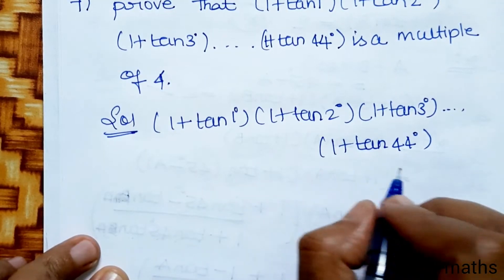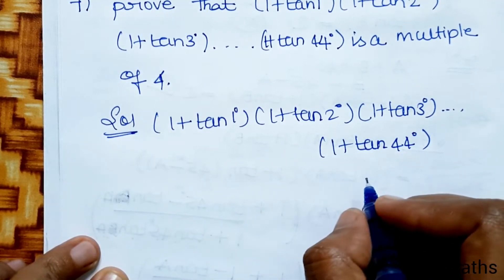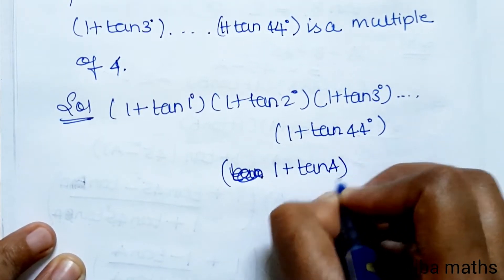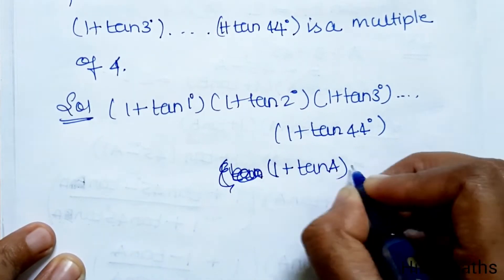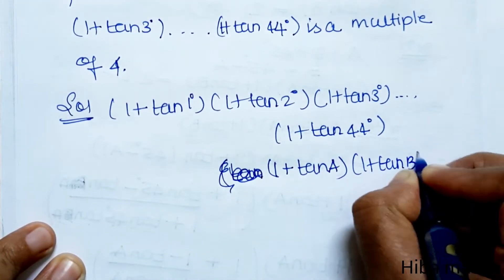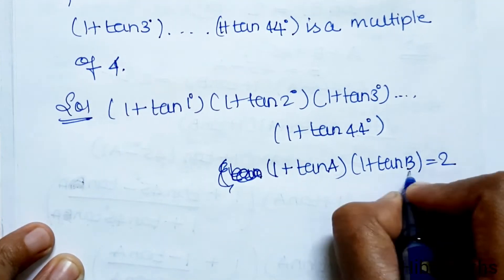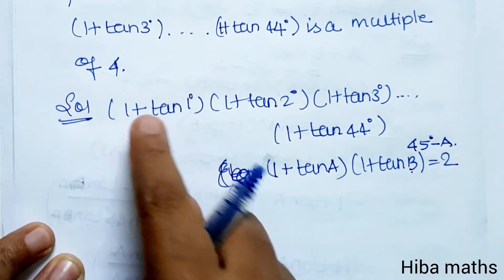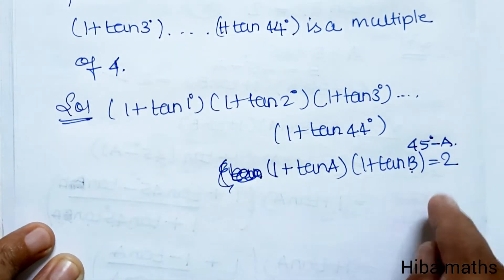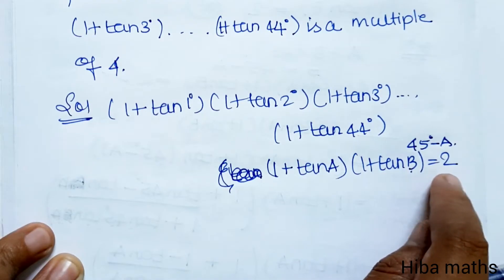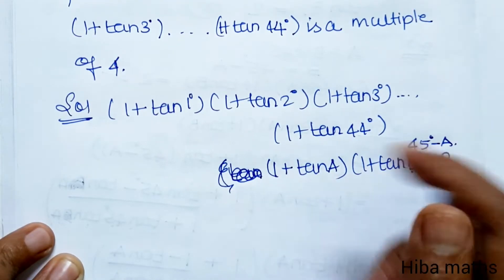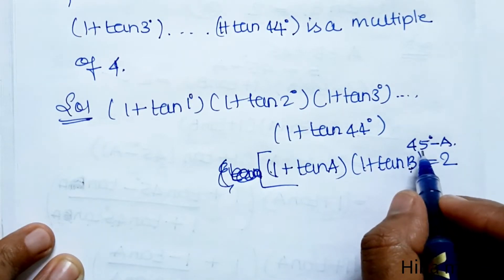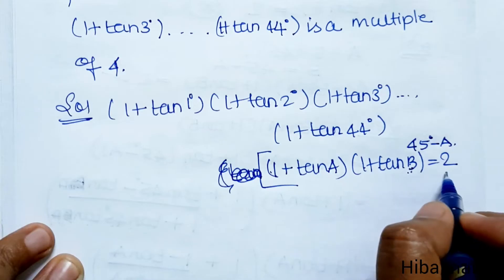First, recall the result from the 6th question: (1 + tan a)(1 + tan b) = 2, which we proved previously. Using this format, we can pair terms such that a + b = 45°. When a + b = 45°, we have (1 + tan a)(1 + tan b) = 2.